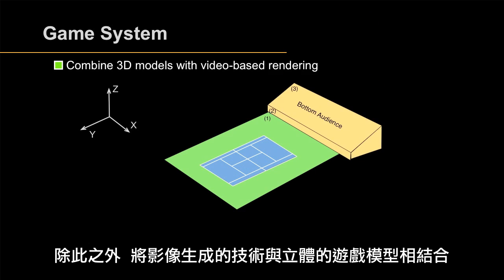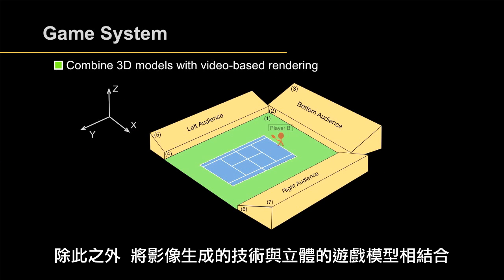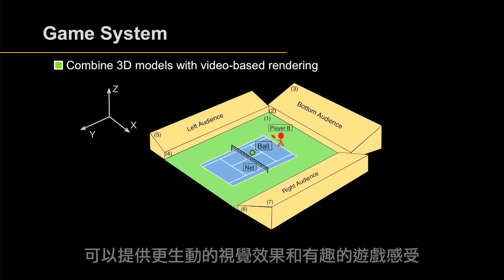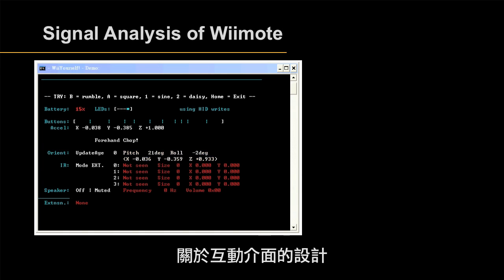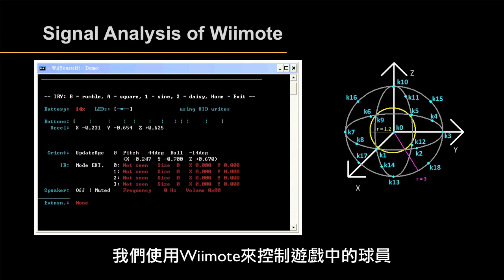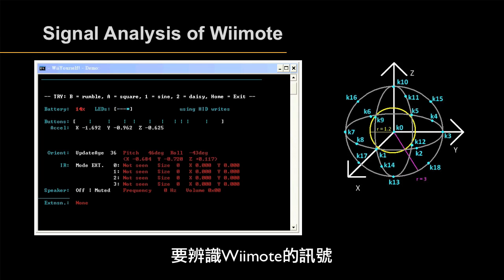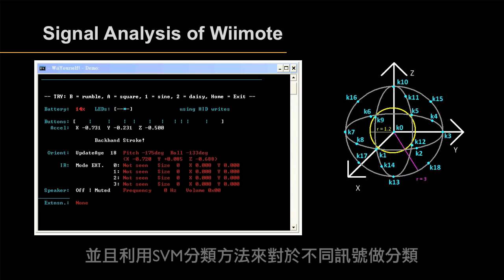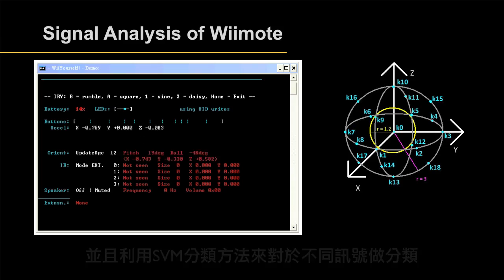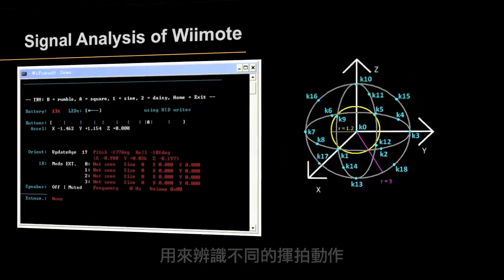In addition, the 3D game model can be combined with our video-based rendering, which provides more vivid visual effects and interesting game results. For the interface, we use a Wiimote to control the player. To recognize the signal from the Wiimote, we detect the acceleration signal in the X, Y, Z axes as features of the input signal, and use an SVM classifier to recognize different signals. At the end of this video, rendering results of Tennis Roleplay and our live demo are shown.